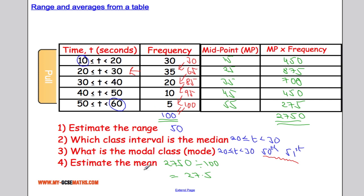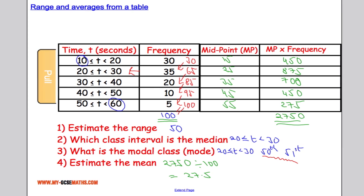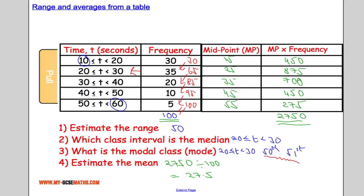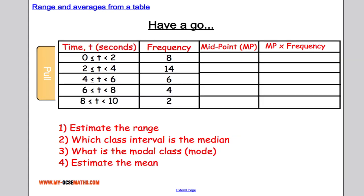Now the reason why it's an estimate is because we chose midpoints. That's why it's an estimate. That's about all you'll need to know in terms of your exam for finding the mean, median, mode and range from a table. Here's a question for you to try. See if you can work out the four questions and get the correct answers.